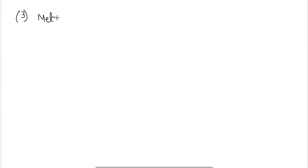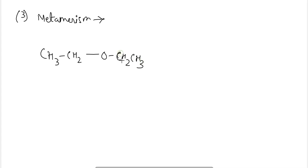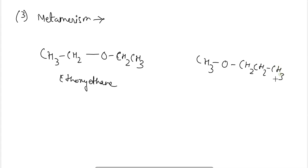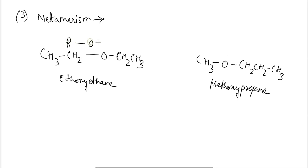Next is metamerism. Ethoxyethane can be metamerized to form methoxypropane — the formula is the same for both but the compound changes. The symmetrical chain can be converted to an unsymmetrical chain. So metamerism means R-O-R is converted to R-O-R'.